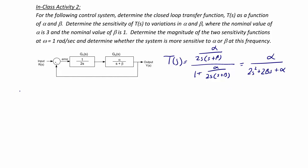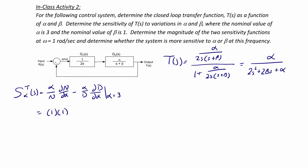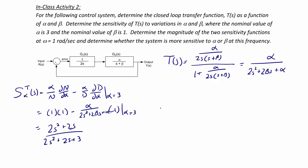First, let's find the sensitivity due to alpha — the sensitivity of the closed loop transfer function with respect to alpha. That is alpha over the numerator times the partial derivative of the numerator with respect to alpha, minus alpha over the denominator times the partial derivative of the denominator with respect to alpha, evaluated at alpha equal to 3. This equals 1 times 1 minus alpha over (2S squared plus 2 beta S plus alpha) times 1, which gives (2S squared plus 2S) over (2S squared plus 2S plus 3).